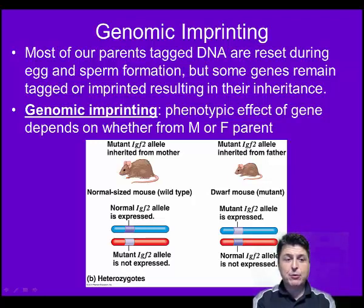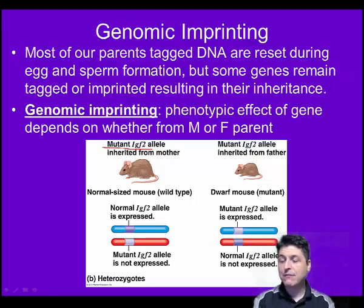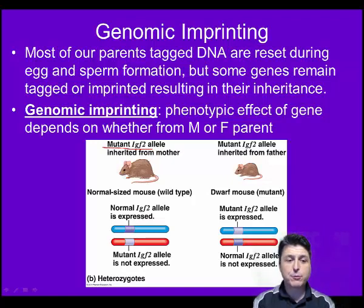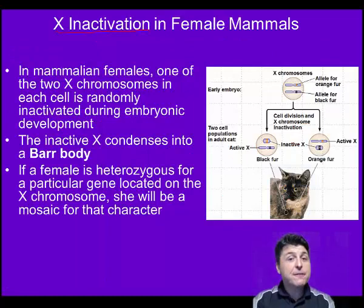Let's look at an example in mice. In this particular example, we're exploring the inheritance of a mutant IGF2 gene, which is the insulin-like growth factor. The proteins from this gene are really important in growth and development before birth. If a mouse inherits the silenced gene from the mother, then the offspring is a normal-sized mouse. But if they inherit that mutant gene from the father, the mouse actually ends up being dwarfed.